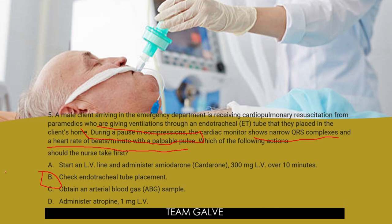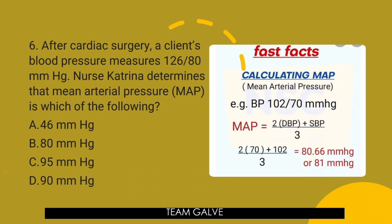Question number six. After cardiac surgery, a client's blood pressure measures 126 over 80 mmHg. Nurse Katrina determines that the mean arterial pressure (MAP) is which of the following? You'll need to use the MAP formula here, so let's see if you know it. Is it A, 46 mmHg? Is it B, 80 mmHg? Is it C, 95 mmHg? Or D, 90 mmHg?